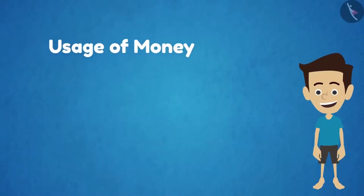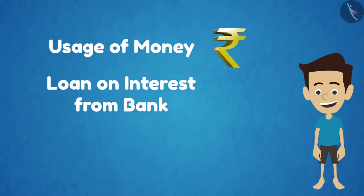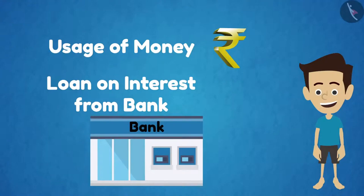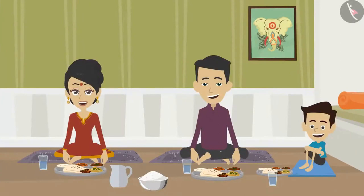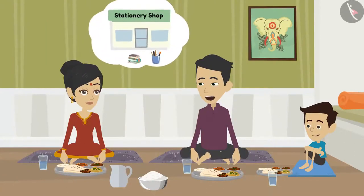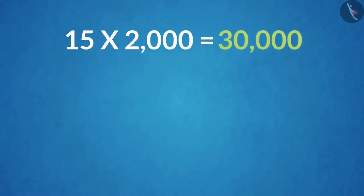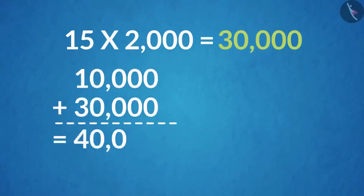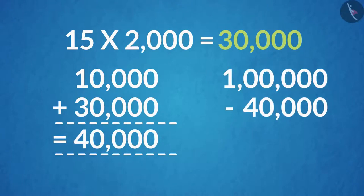Hello friends! Welcome to today's lesson on money. Today we will learn the usage of money in daily life along with Sham, and also learn how to take a loan from the bank on interest. Sham wants to open a stationary shop but has only 10,000 rupees. They also saved 2,000 every month for 15 months, giving 30,000. So total savings are 10,000 plus 30,000 equals 40,000 rupees, but they need 1 lakh — so they need to borrow 60,000 rupees.